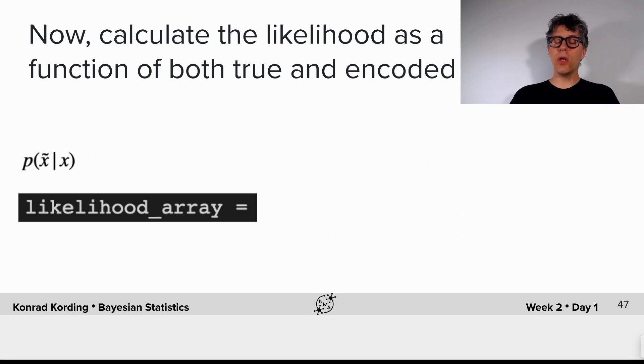So now we want to calculate this p of x tilde given x as a function of x, which is what we did before. Now we want to calculate that as a function of both. So why don't you calculate the likelihood array?